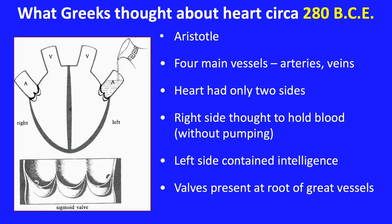In a bit of anatomy history, let me tell you what the Greeks knew and thought about the heart circa 280 BCE. Aristotle, a century before, made the claim that the heart was the most important of all organs and the seat of all intelligence, based on observations of chick development in the egg. This made Aristotle realize that the heart was the source of blood. Since blood was thought to carry heat, the heart must be the source of heat.